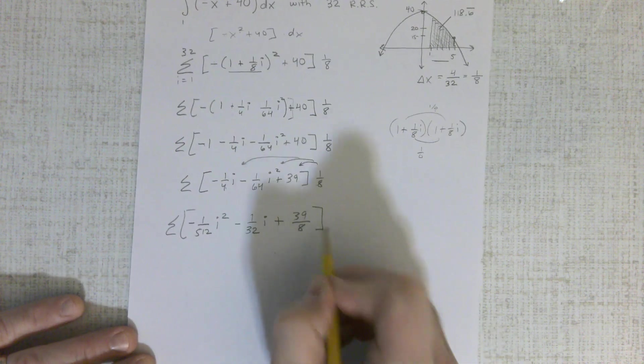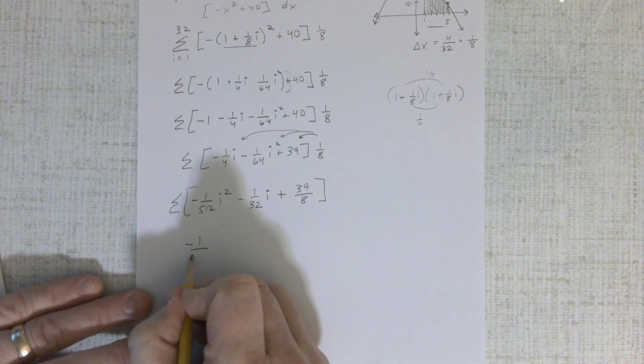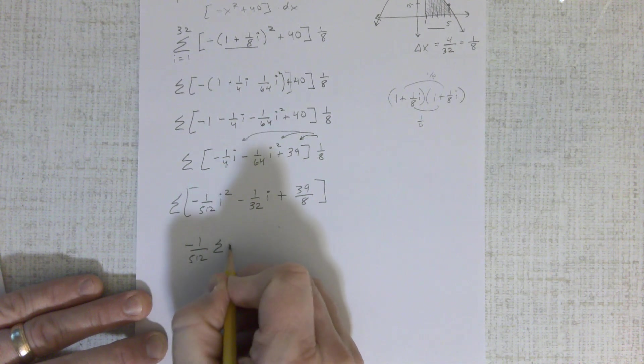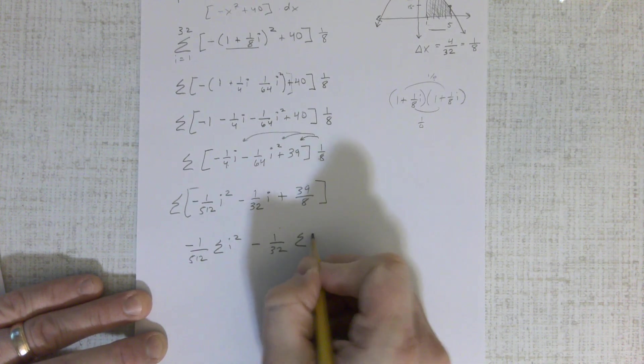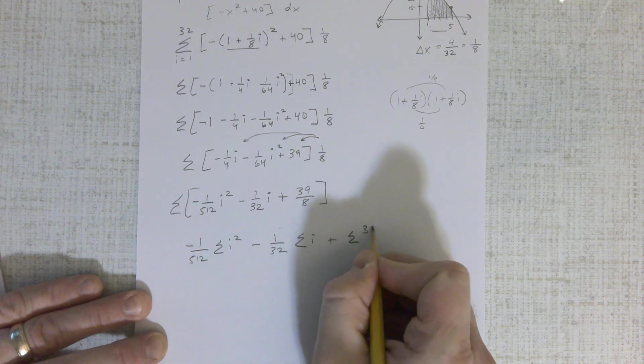Now let's just separate it. negative 1,512 sum of i squareds minus 132 sum of i's plus the sum of those.